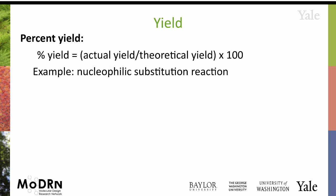You have a certain maximum amount of stuff, theoretically, that you can get, and then you look at the actual amount of stuff that you actually got, and you compare the actual amount compared to the theoretical amount — and that is how you judge whether or not you are a worthy chemist.